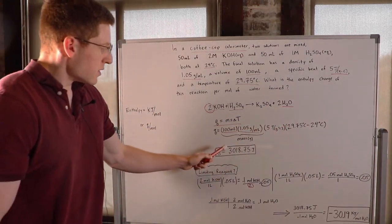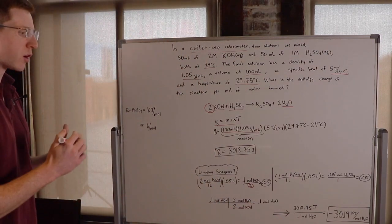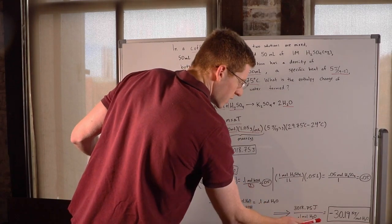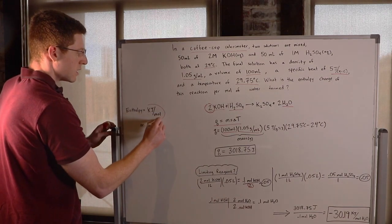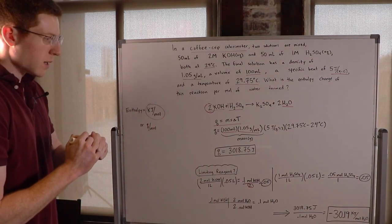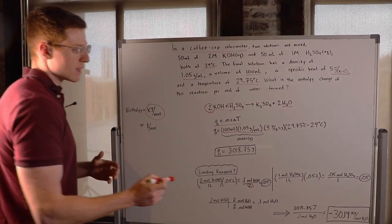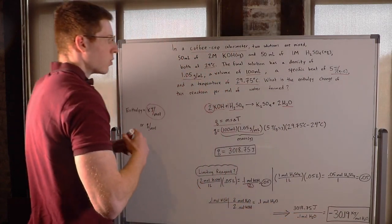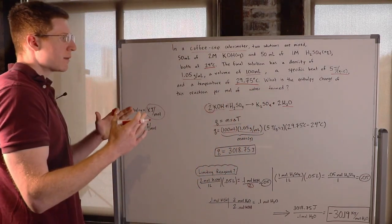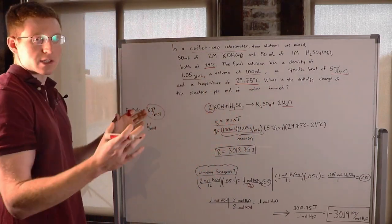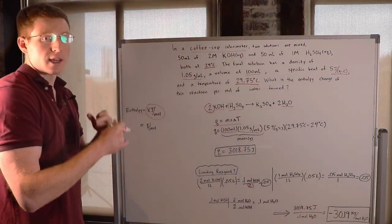So now we know this amount of heat — 3,018.75 joules — is evolved per 0.1 moles of water produced. Our final answer: dividing these numbers and converting to kilojoules gives us negative 30.19 kilojoules per mole of H2O. Notice the temperature started lower and then went up, meaning this reaction released heat and was exothermic. For exothermic reactions, the enthalpy change is negative.